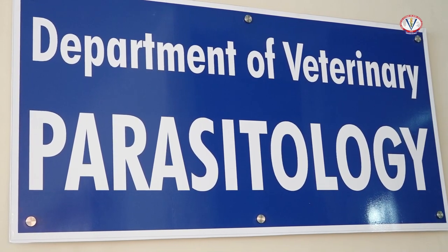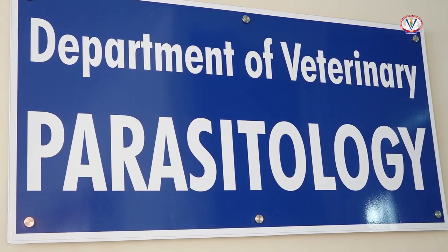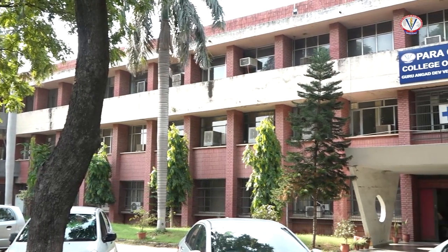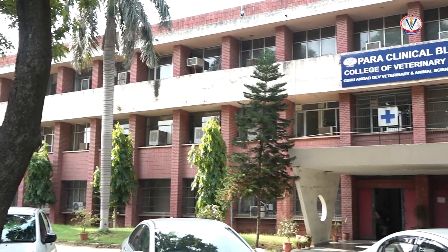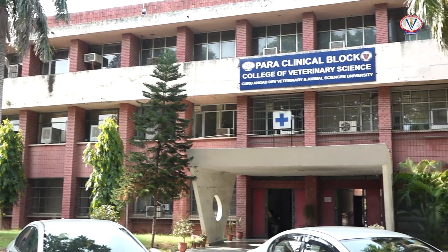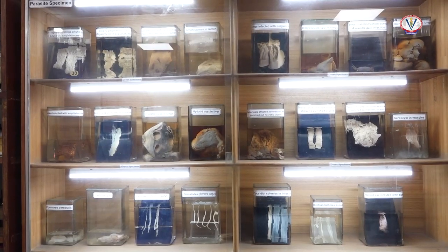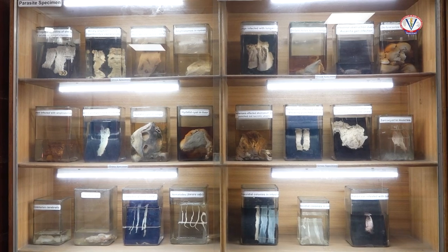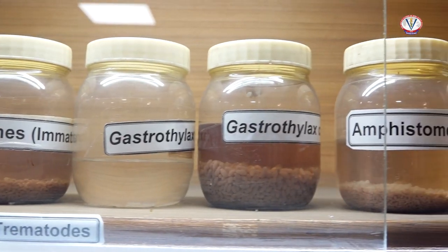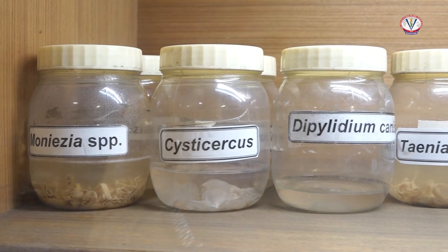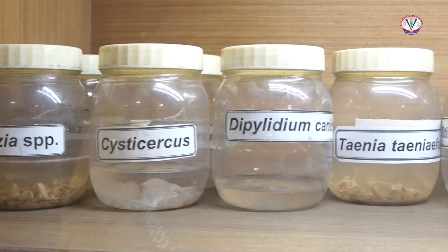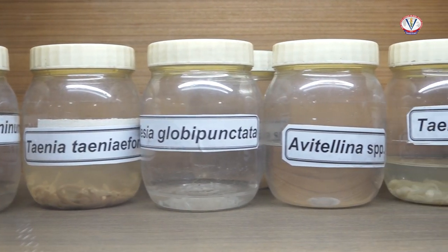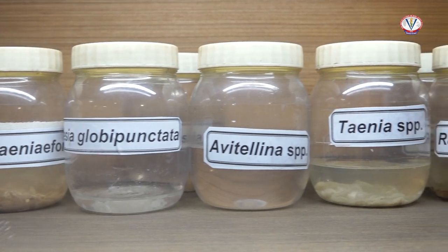This video, prepared by the Department of Veterinary Parasitology, College of Veterinary Science, Guru Angad Dev Veterinary and Animal Sciences University, Ludhiana, aims to present the morphological characteristics of helminth parasites, particularly trematodes and cestodes, of veterinary importance for students of veterinary helminthology to help them in identification of the worms.